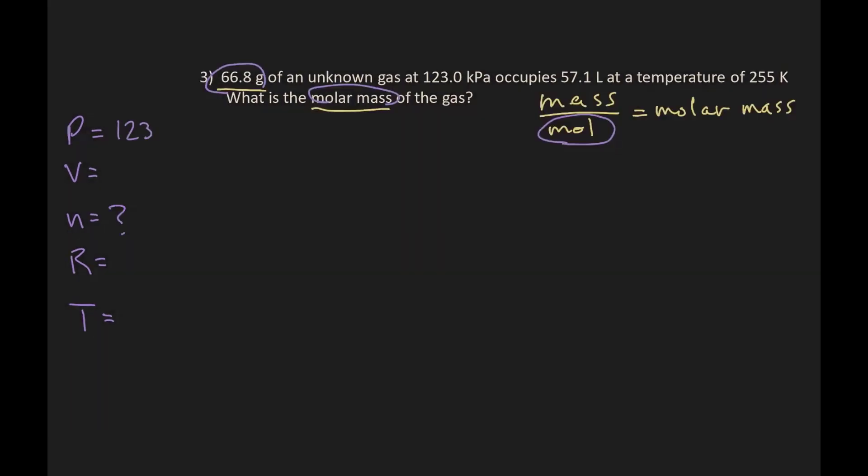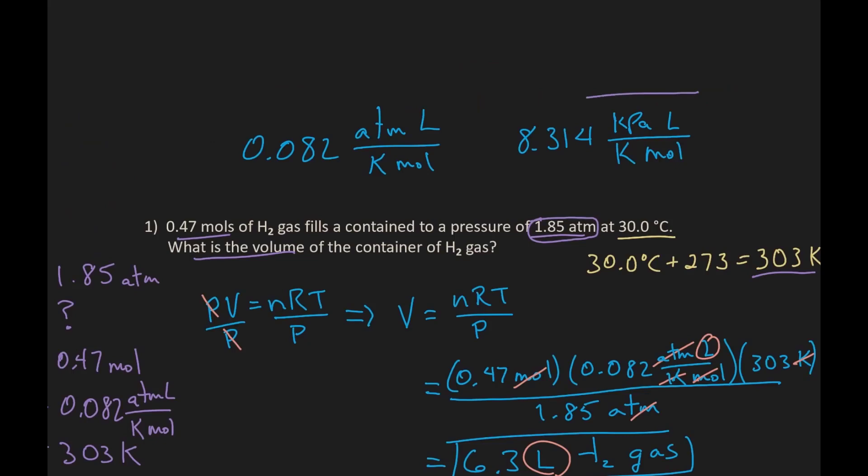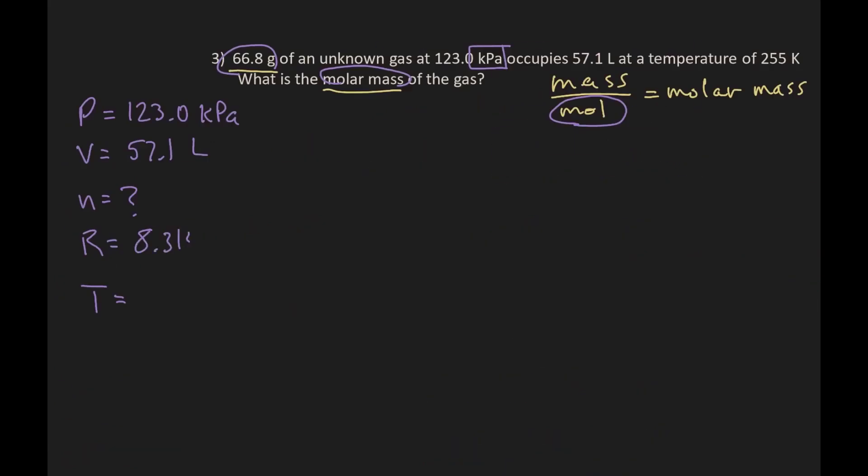So now we have kilopascals as our unit of pressure, and so we're using the value of R that has kilopascals in it, 8.314 kilopascals liters per Kelvin mole, and temperature is given as 255K.